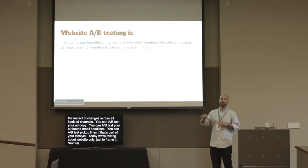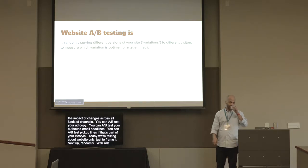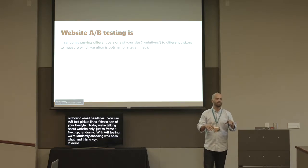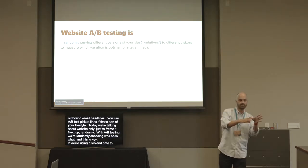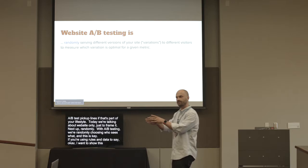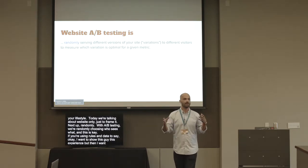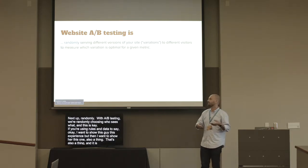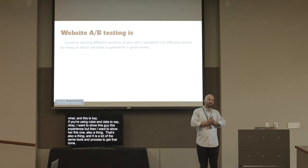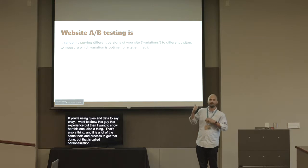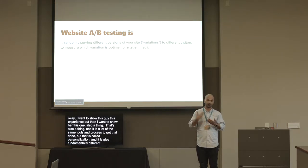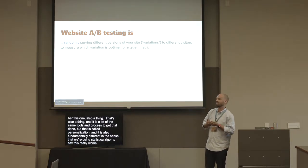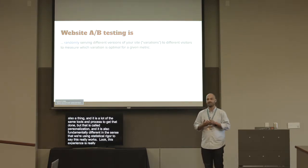With A/B testing, we're randomly choosing who sees what, and this is key. If you're using rules and data to show one person one experience and another person a different one, that's called personalization, and it's also fundamentally different. We're using statistical rigor to say this really works, this experience is really better. With personalization, it's a lot more hunch-driven — it's like, oh, this will probably work, and then you go do it.